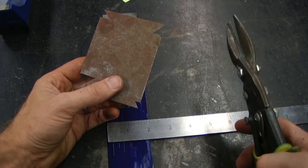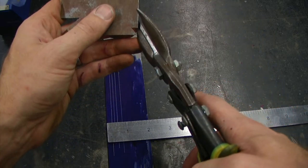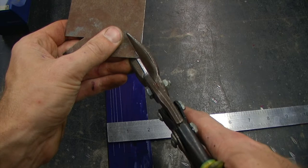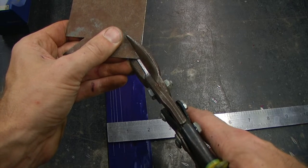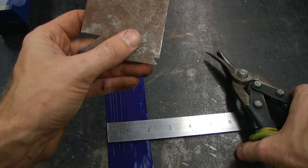Because my quarter inch measurement was slightly small I am going to use the aviation snips to remove a very tiny amount to make that larger.